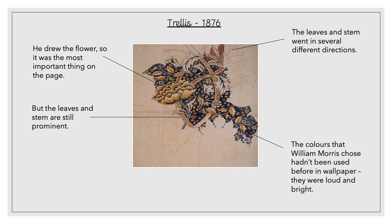That flower was the most important thing on his page, and although the leaves and stems were still visible and prominent, the flower was what your eyes were drawn to. Remember the leaves and stems go in all different directions, and he used those different colours. I've used very bright and bold colours in mine — you can choose to do the same or something a little different if you've got other colours at home. Have a watch of the video, have a go yourselves, and send them back to me.